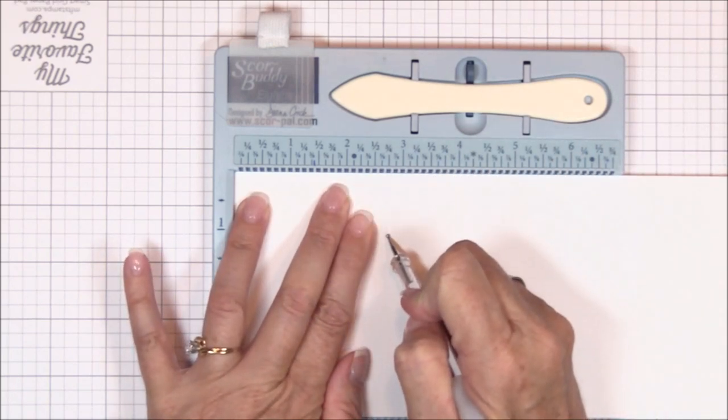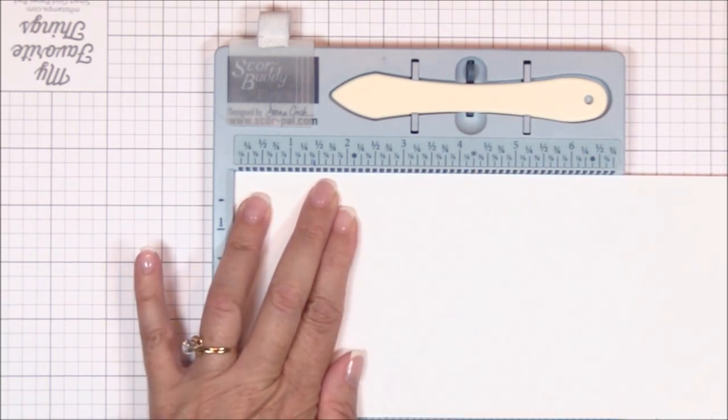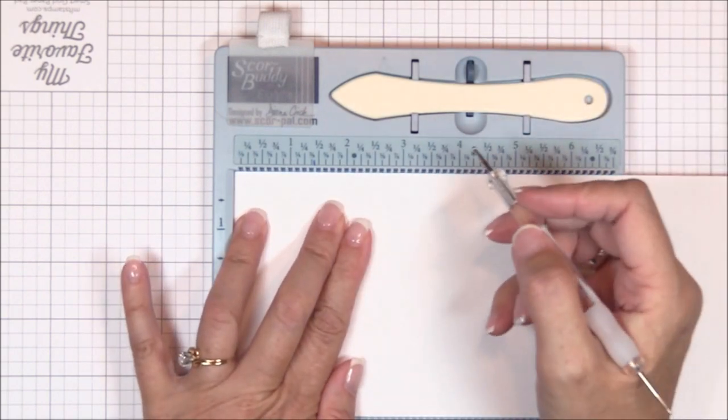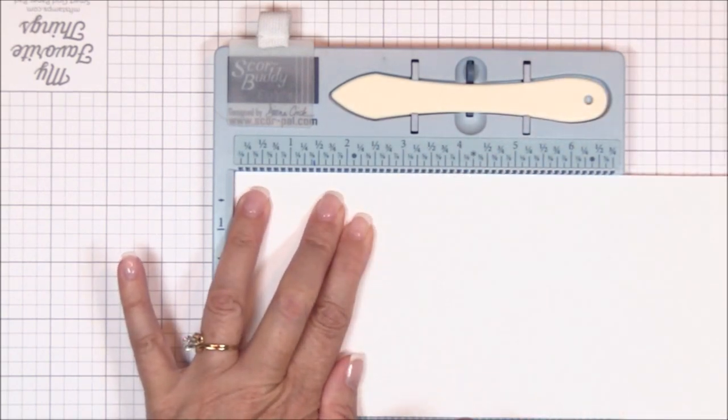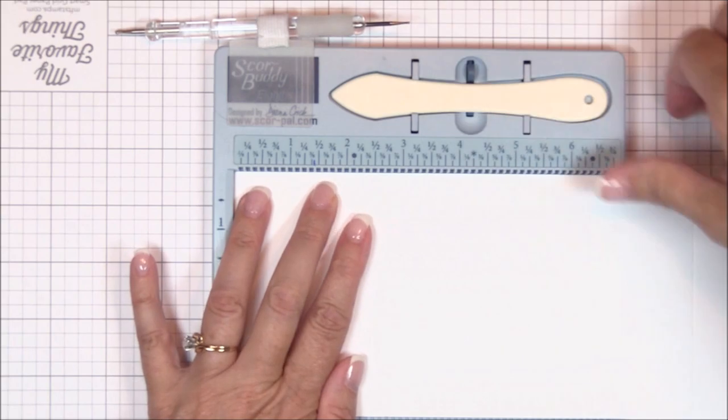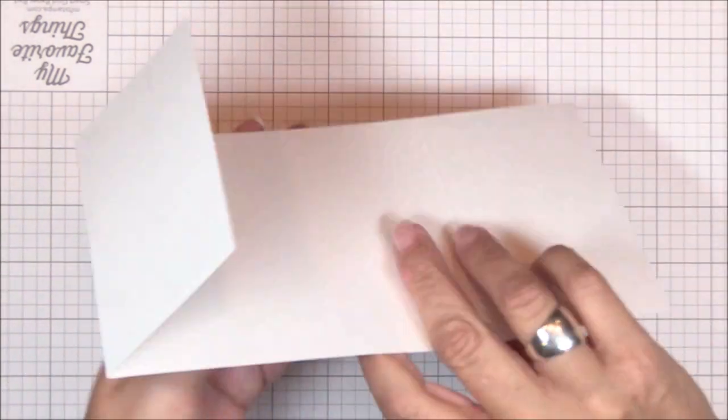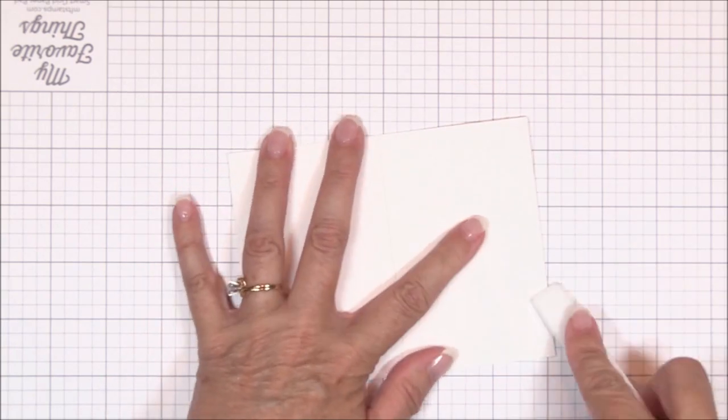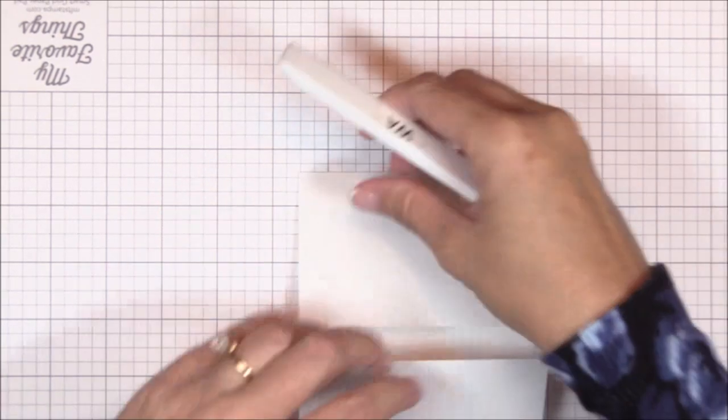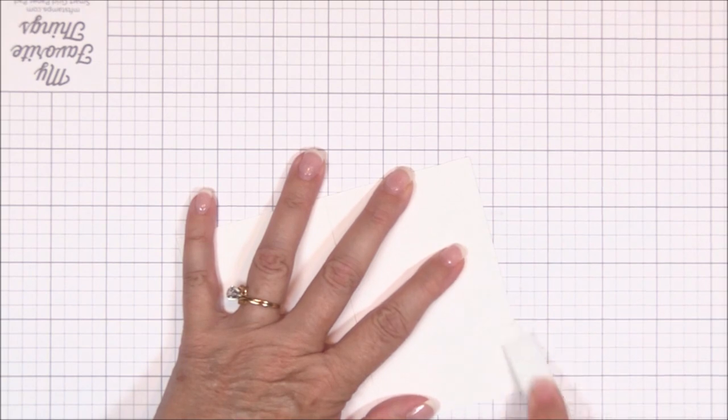I'm starting off with a four and a quarter inch by 11 inch card base and I'm using my score buddy to score the base at two and three quarter inches. I'll flip the base to the other side and score again at two and three quarter inches. I'll fold the flaps on the scored lines and perfect the creases with my Teflon bone folder. This gives me a tri-fold or gatefold card base.